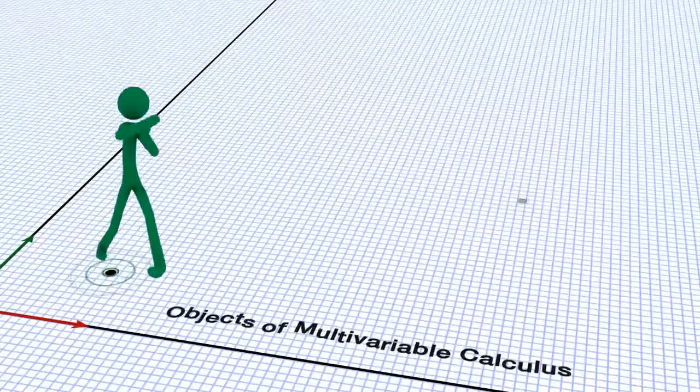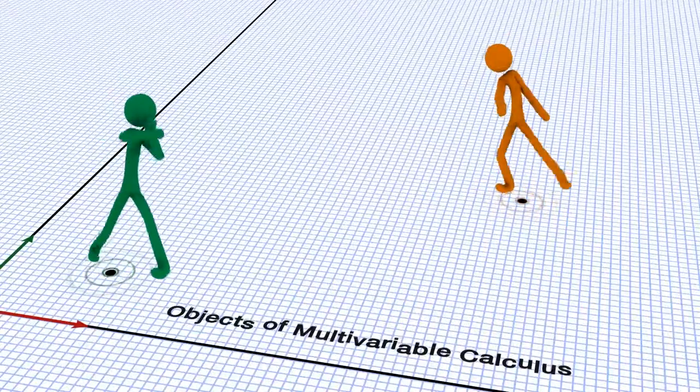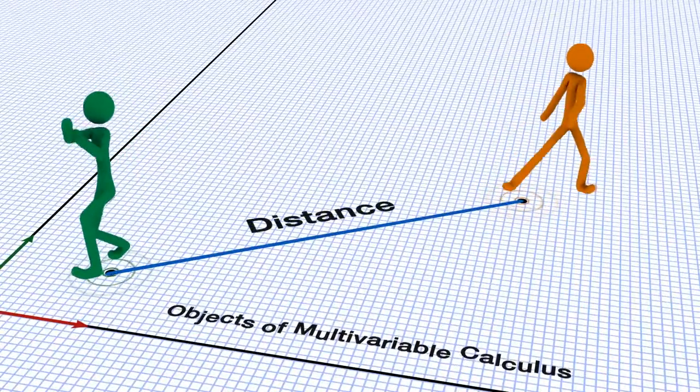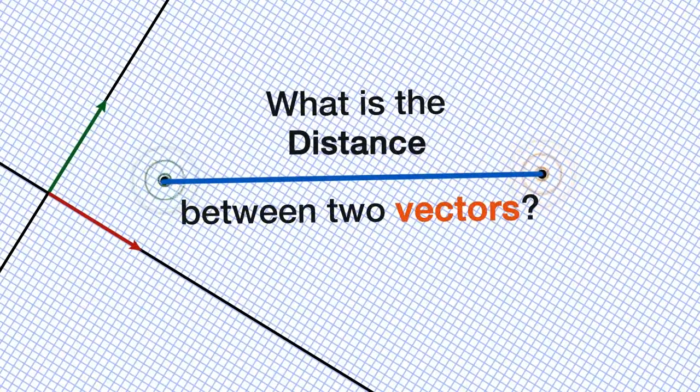Now that we have the objects of multivariable calculus, we would like to measure the distance between them. But what is the distance between two vectors?